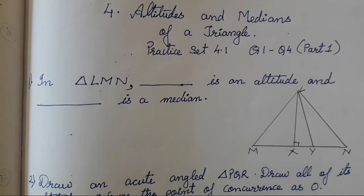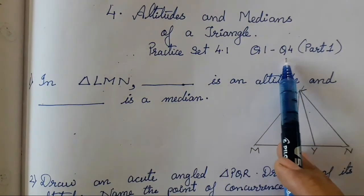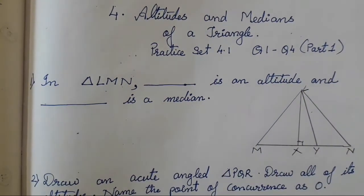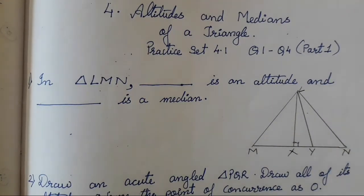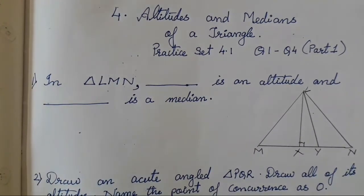Hello everyone, today we are going to study chapter number 4 - altitude and median of a triangle, practice set number 4, questions 1 to 4. We are going to complete these in today's video. The other questions I will be posting tomorrow. So let's start with the first question from practice set number 4.1.